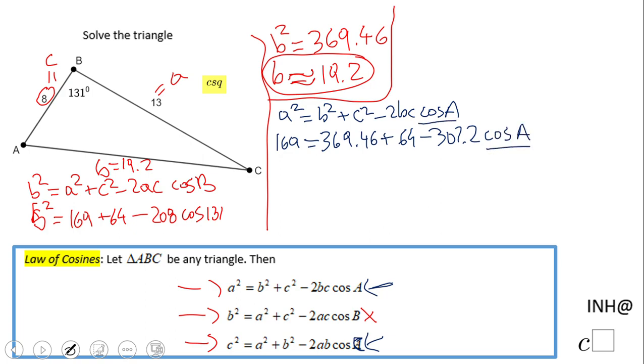A little bit of simplification here. On the right side, we have 369.46 plus 64, that is 433.46, minus 307.2 cosine of A. We're going to subtract 433 from both sides.